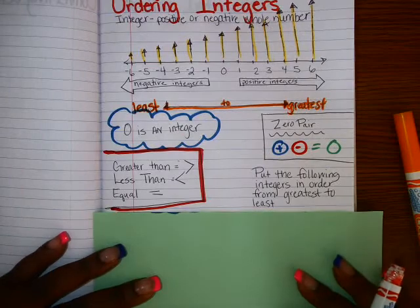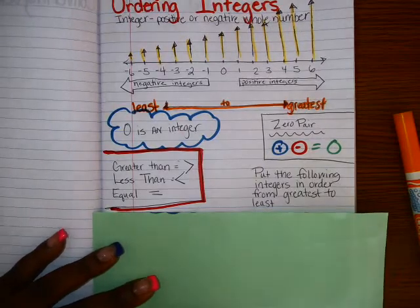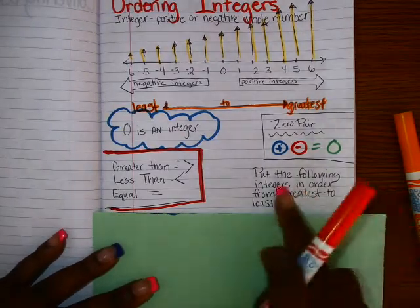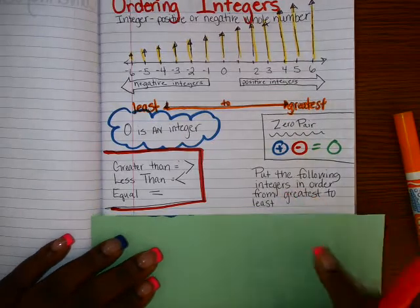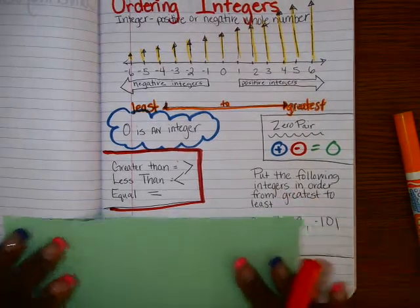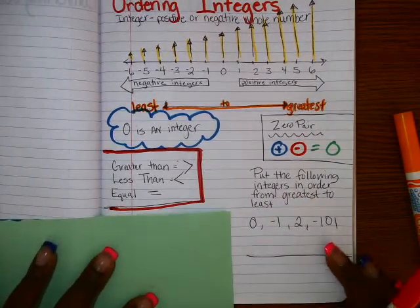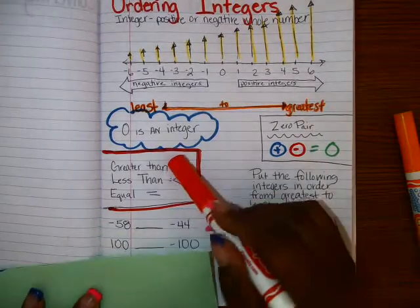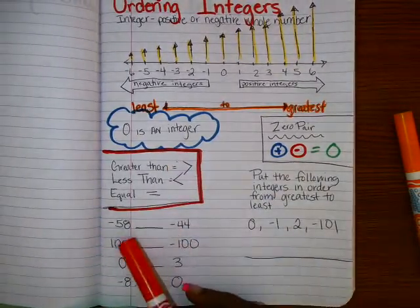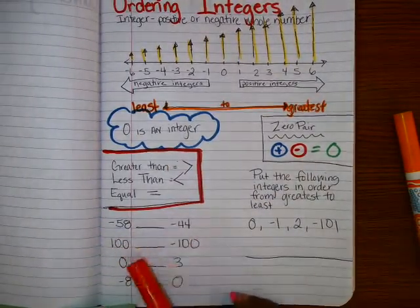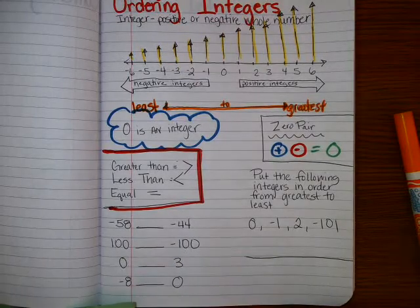So with this knowledge, I want you to do two things. I want you to put the following integers in order from greatest to least — you can use the number line, there are four of them. And then I want you to use these symbols and tell me which number is greater than, less than, or equal to.